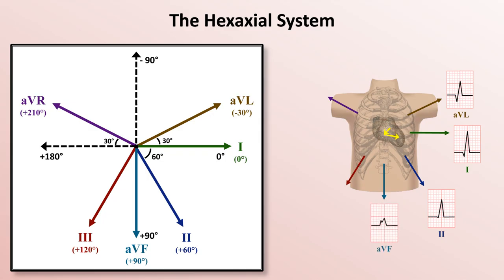In AVF, both the first and second depolarization vectors are in a sort of similar direction as the lead, therefore both deflections are positive but are relatively low amplitude.